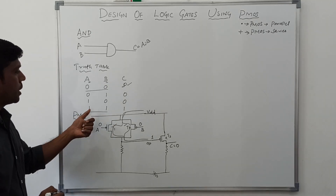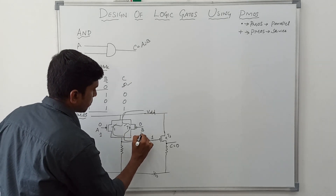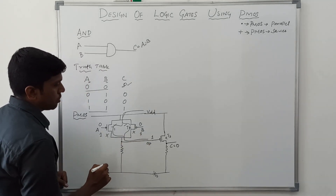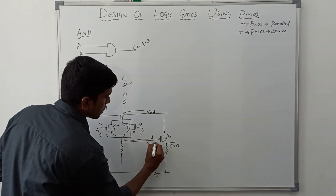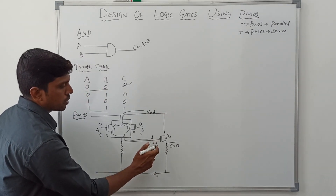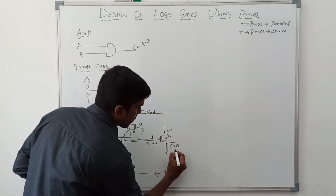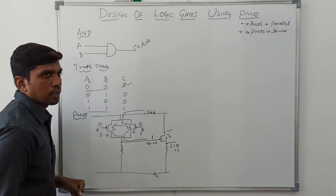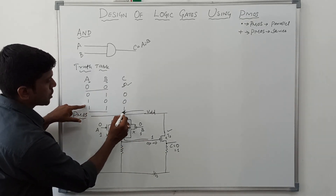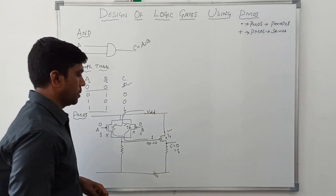So output C equals 0, which gives the correct result. For input A=1 and B=1, these two transistors are turned off, so output of the PMOS logic circuit is 0. This 0 is given to the inverter input, so T3 transistor turns on and output of the circuit is 1. Comparing with the truth table, input 1-1 gives output 1 — the circuit gives the correct result.